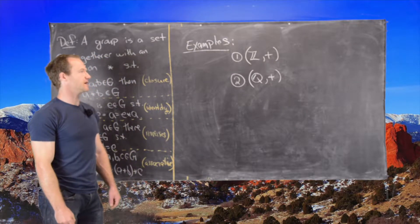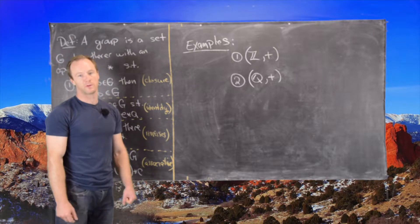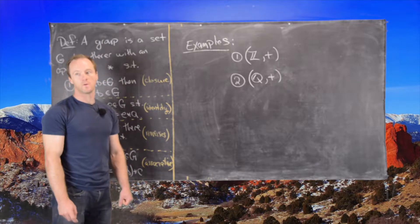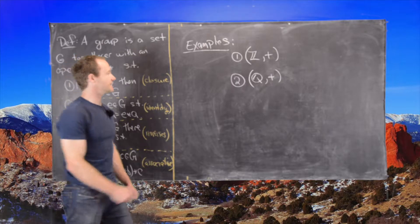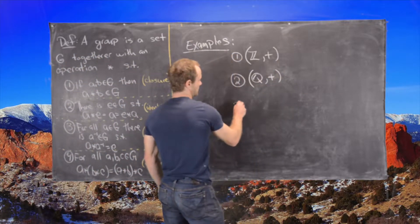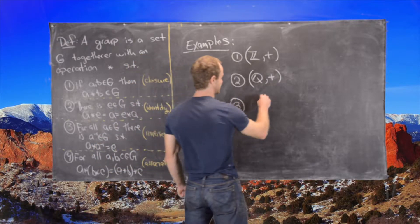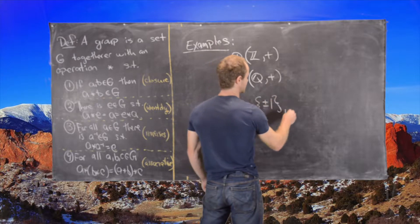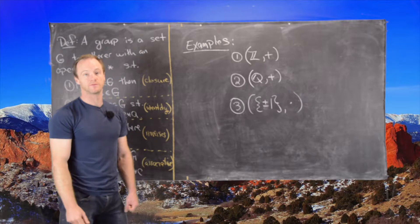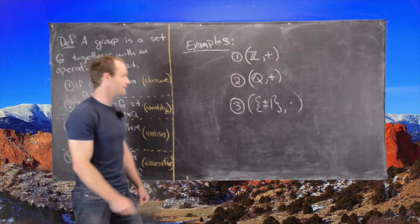So now let's look at maybe some multiplicative groups. Notice that the integers will not form a multiplicative group. Hardly anything has an inverse. Only 1 and negative 1 have inverses. In fact, we could take that subset of the integers to be a group. So we could say the set {1, -1} together with the operation of multiplication would form a group. That's closed, there's an identity, everything has an inverse, and so on.